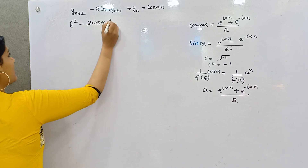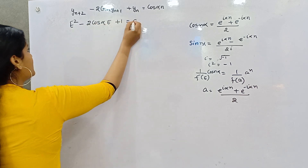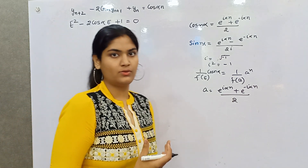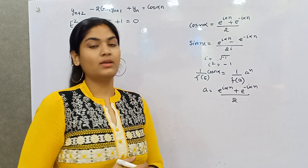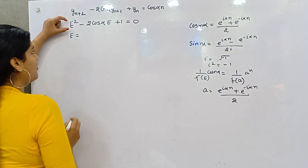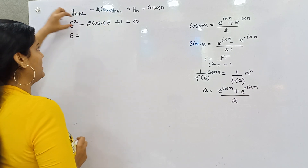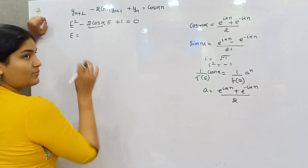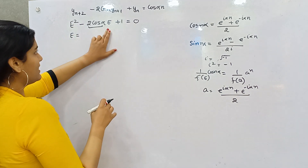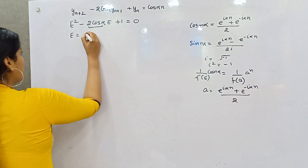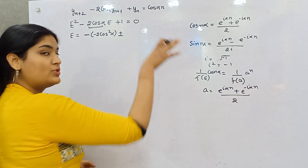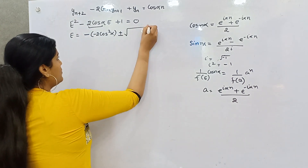Let's begin. The first step is the same — you have to form the auxiliary equation. Now you have to solve it. Because it has a trigonometric function in it we cannot do simple factorization, so we use the quadratic formula. The equation is in the form x² - bx + c, so we apply: x = (-b ± √(b² - 4ac)) / 2a.